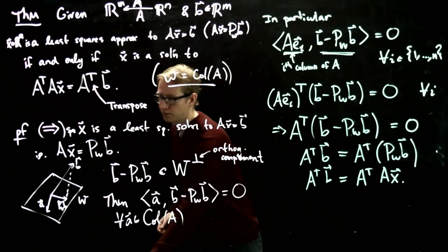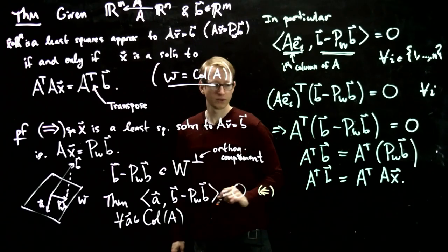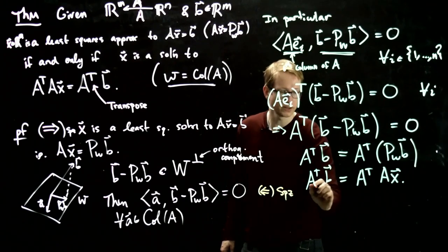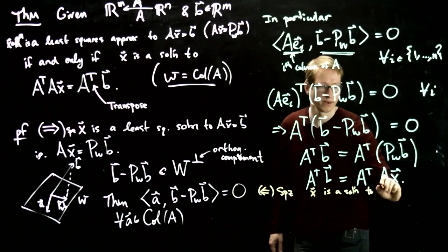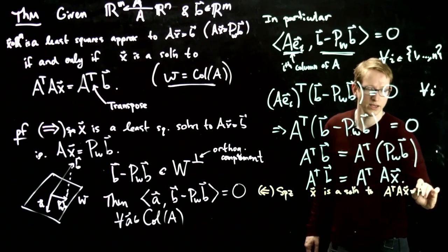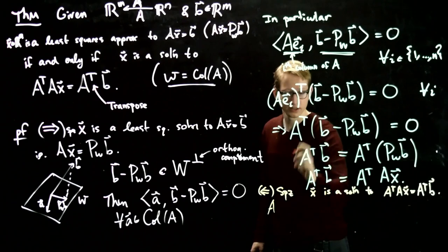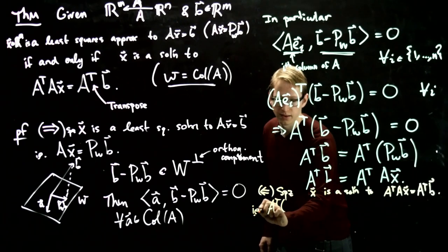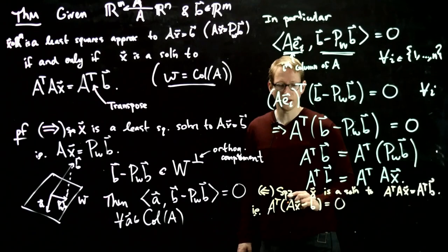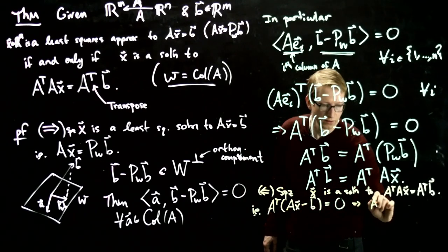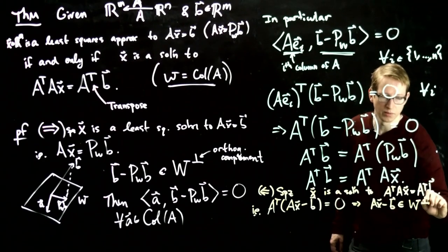To prove the theorem in the other direction, suppose X is a solution to A transpose AX equals A transpose B. We can move everything over, going backwards in the calculation, and express this as A transpose times (AX minus B) equals zero. In other words, the vector AX minus B is in the orthogonal complement of the column space of A — so it's in the orthogonal complement of W.